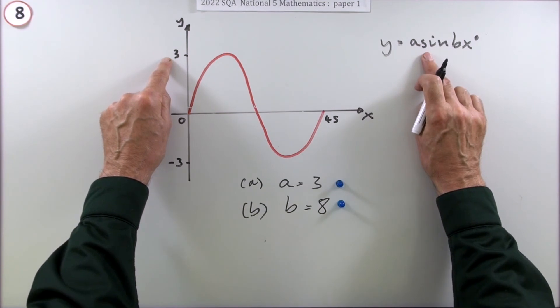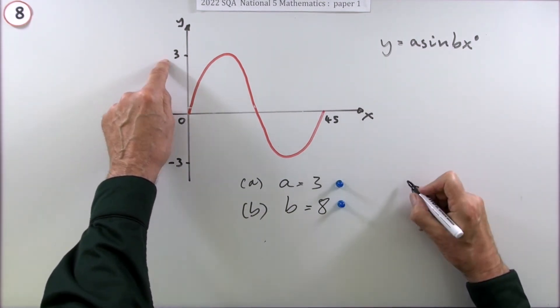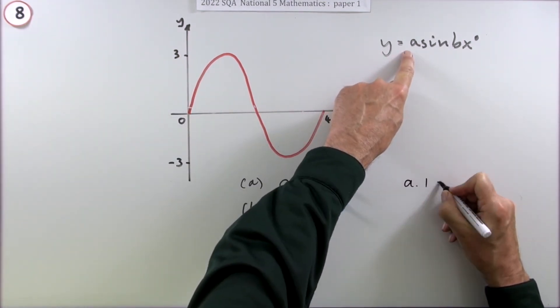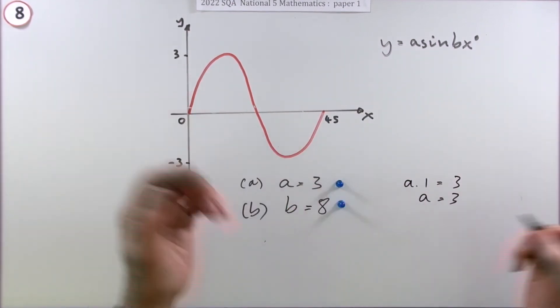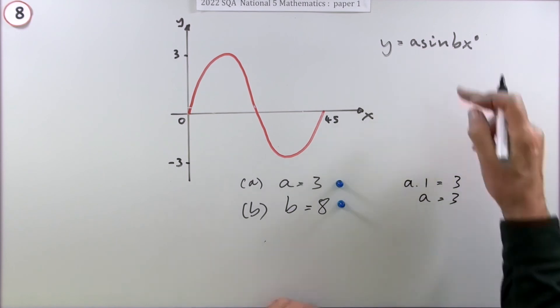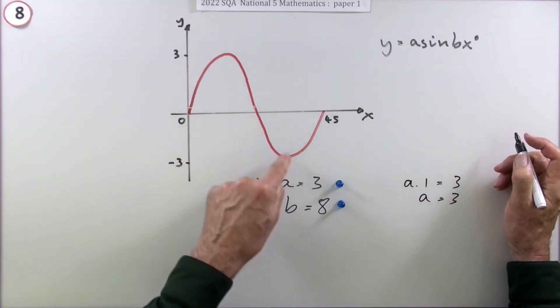So you could say here, well, if sine, no matter what you put in, can only go up to one, and I've gone up to three, you could say, well, a times one must be three, in which case a is three.